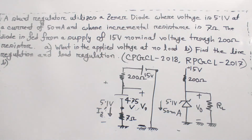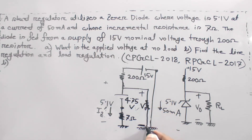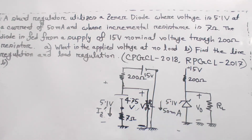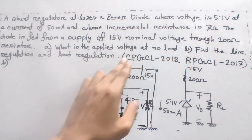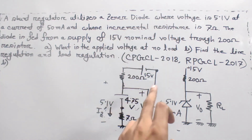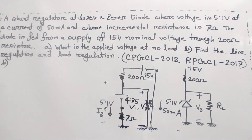For load regulation, we add the load and add the load current. The supply current will be passed, and we add the load current. Under no-load condition, the current through the zener is at its nominal 50 milliampere. When load is added, the current distribution changes.